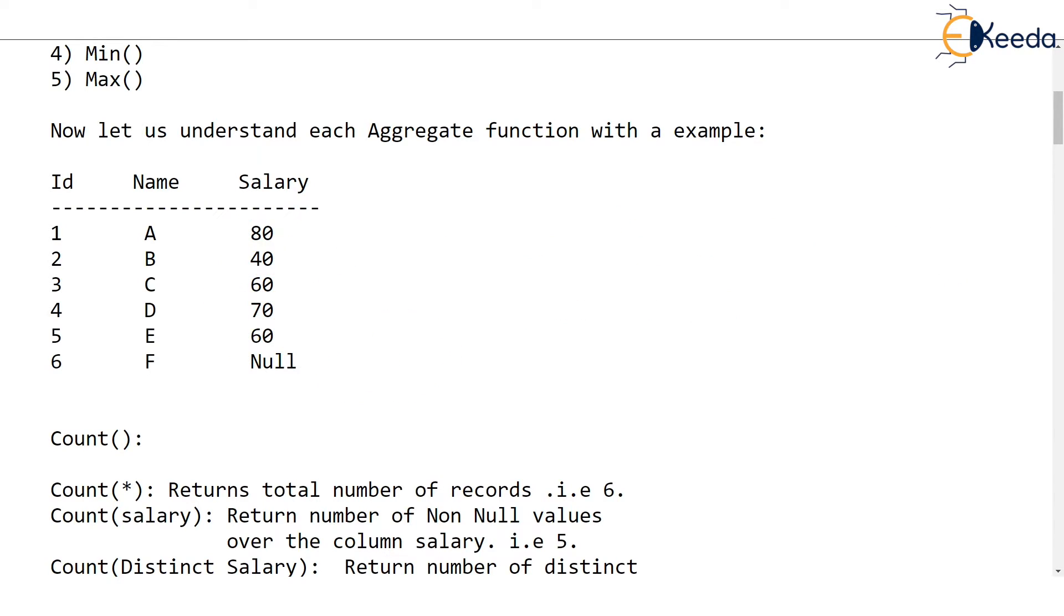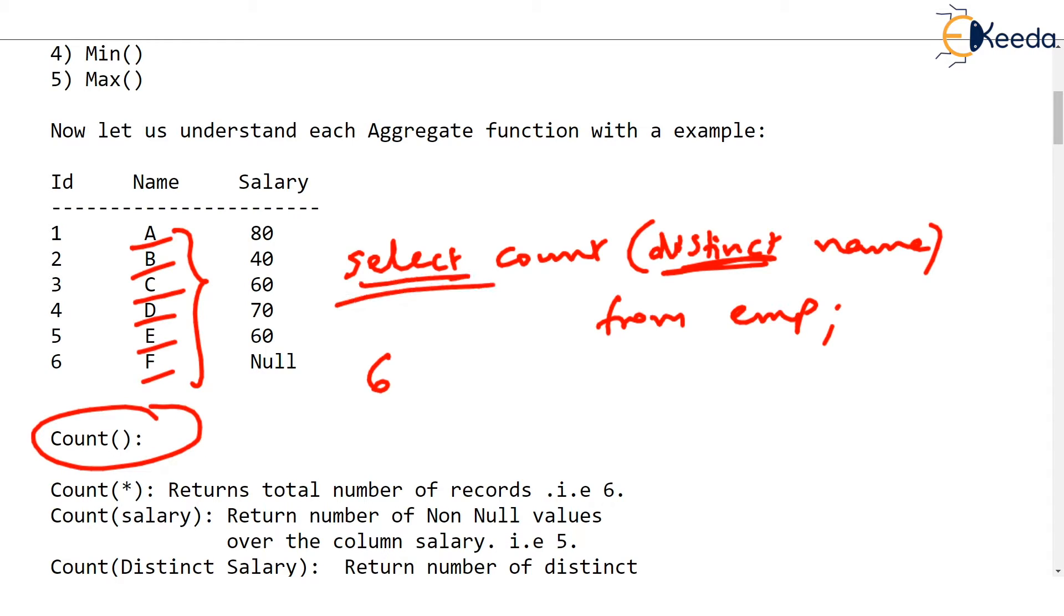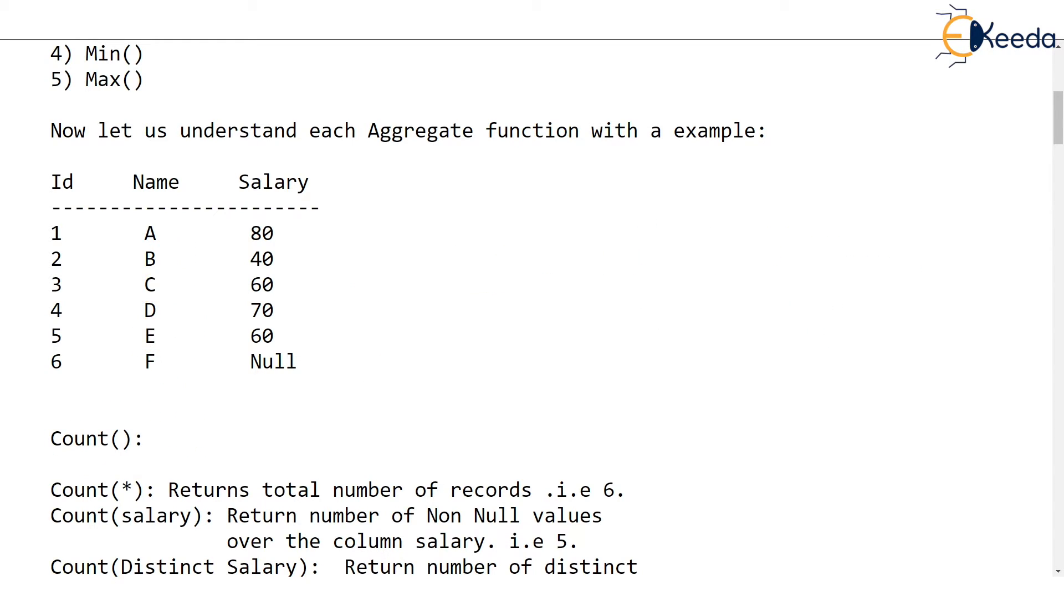Whereas, if you give select count distinct name from emp, it will count how many names are there: A, B, C, D, E, F. Although we have given distinct, all names are different. So all names will be counted and the answer will be 6. That's how count is used with select statement in SQL. Very easy, isn't it?